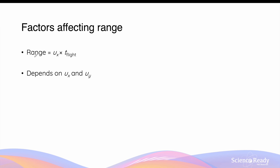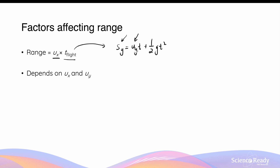In the absence of air resistance, the range of an object is given by its initial horizontal component velocity, ux, multiplied by its time of flight. The time of flight can be examined using the equation Sy = Uy·t + ½g·t², where Sy and Uy are the vertical components of displacement and initial velocity, respectively. If the initial vertical velocity is bigger, this gives a longer time of flight; if smaller, a shorter time of flight.